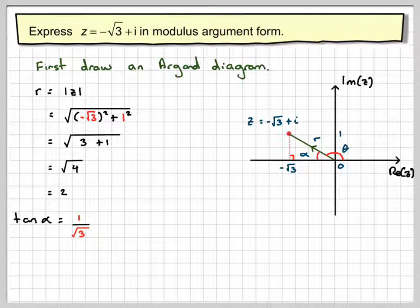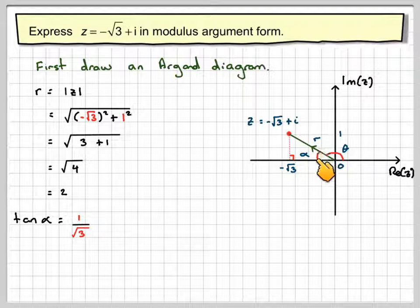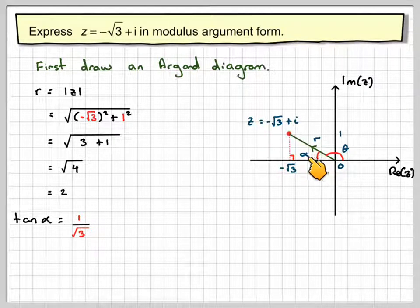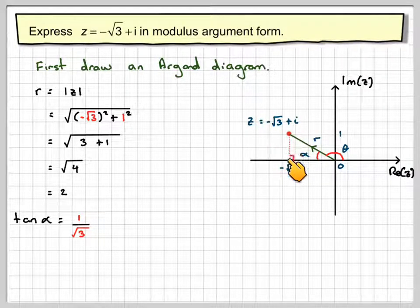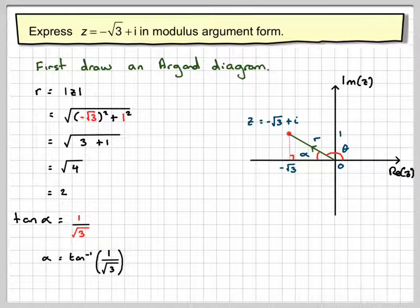To find the angle, because this is in the second quadrant, you need to make this angle here called alpha. And then forget that this is negative and just do tan to the minus 1 of 1 divided by root 3. Do tan to the minus 1 of that, and you should know that it's pi by 6.